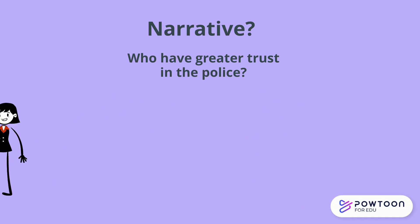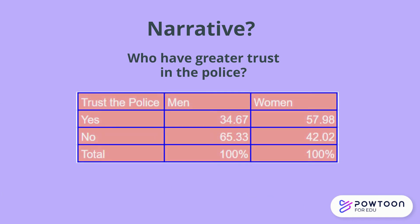First we gather our data in a crosstab. Here we can see that women are more likely to say that they trust the police in our sample compared to men. But we want to be able to convey this in a way where our audience can easily interpret the trend that's occurring.